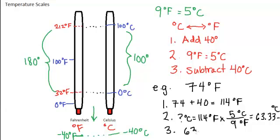I need to subtract 40. So I've got my 63.333 minus the 40. And when I plug that into my calculator, I end up with 23 degrees Celsius.